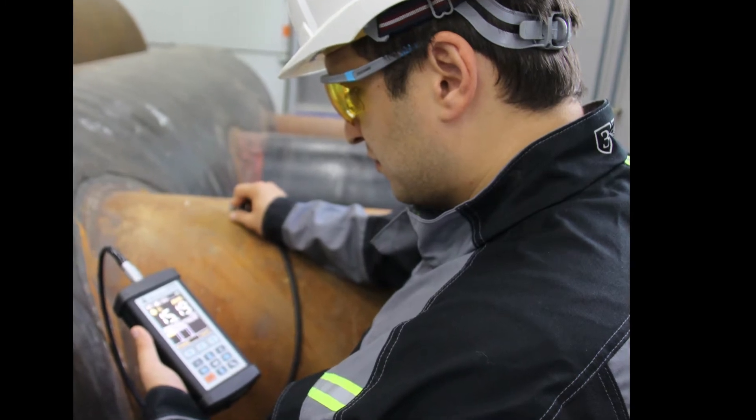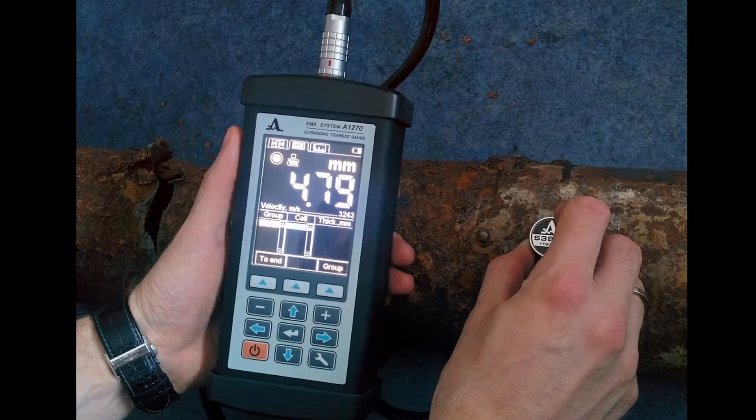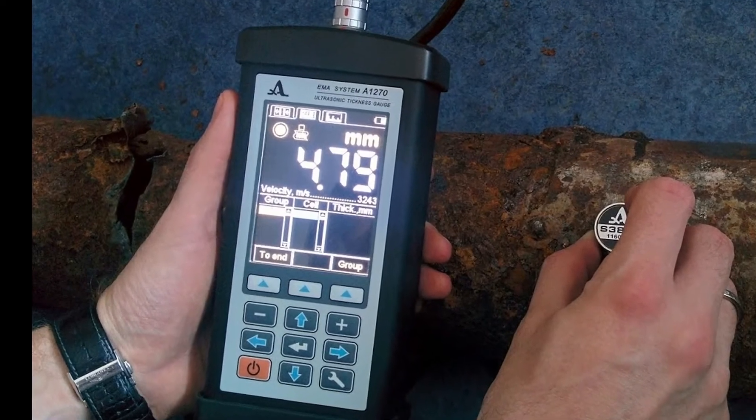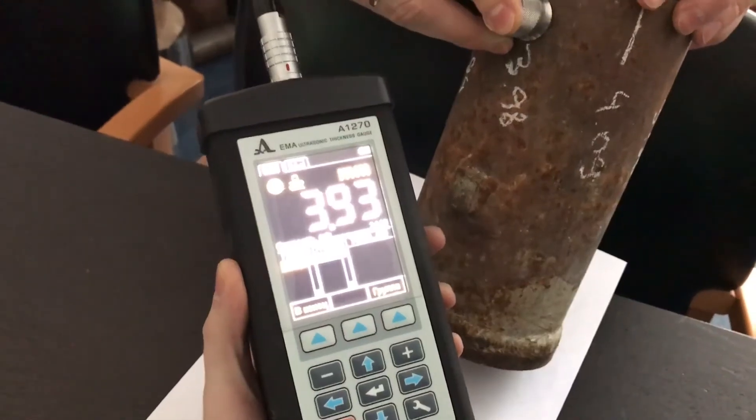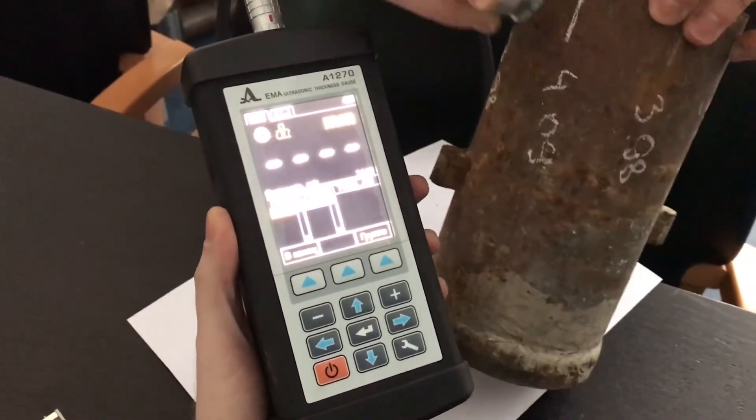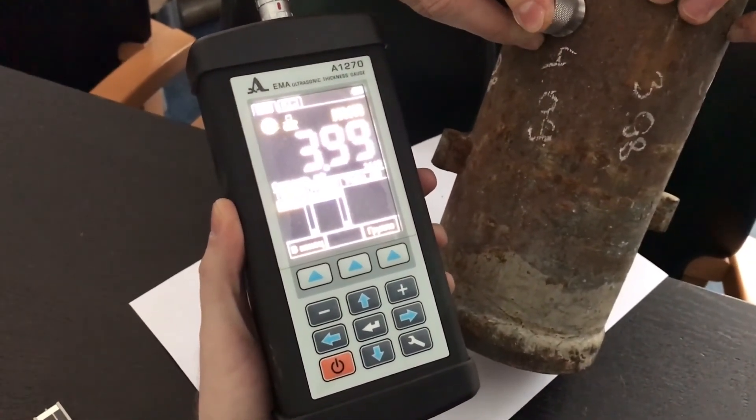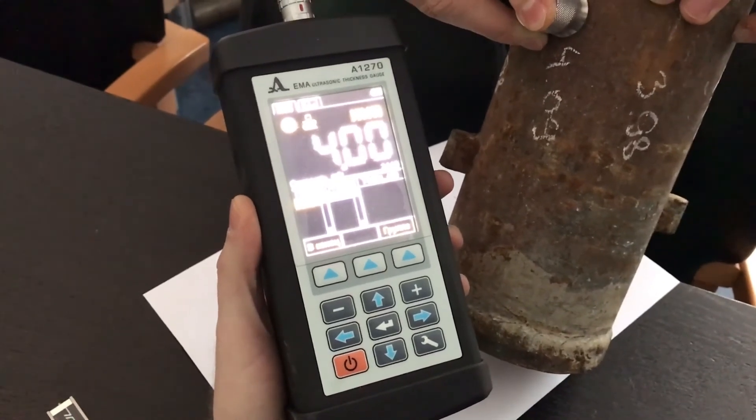The same model A1270, equipped with the recently developed transducers possessing temperature-resistant acylon coating, can couplant-free operate on extraordinarily hot inspection objects, providing accurate and reliable readings.